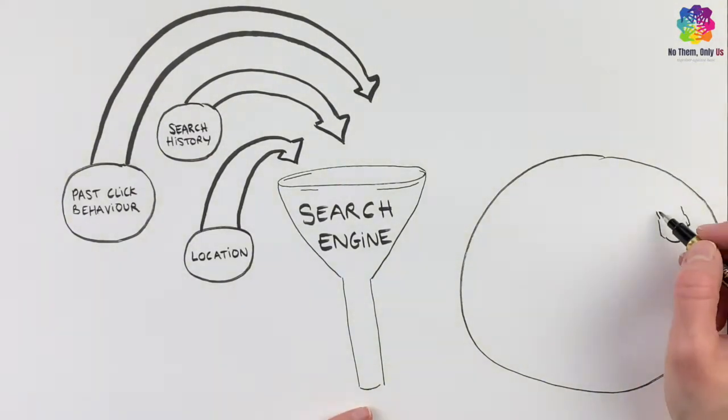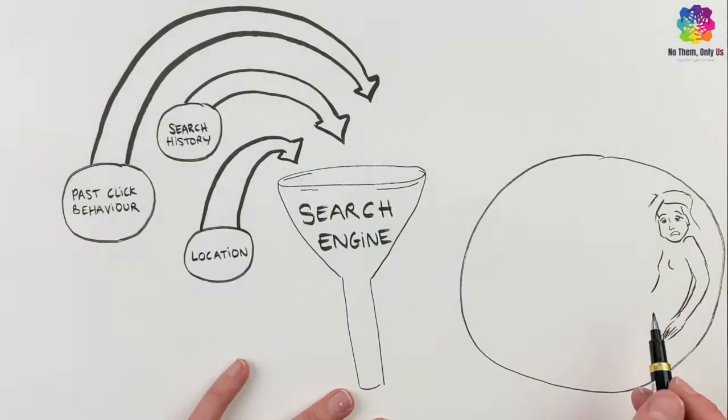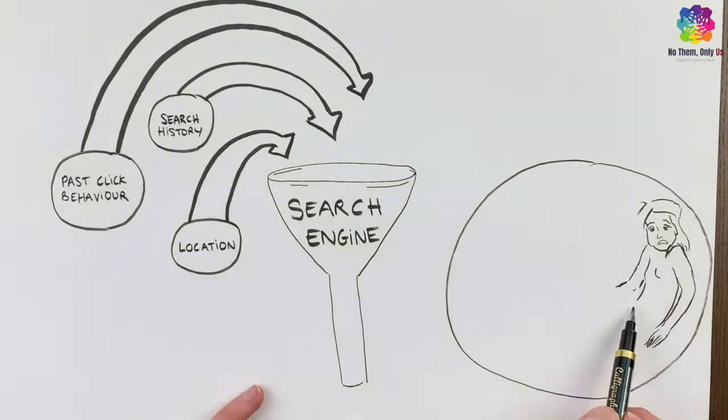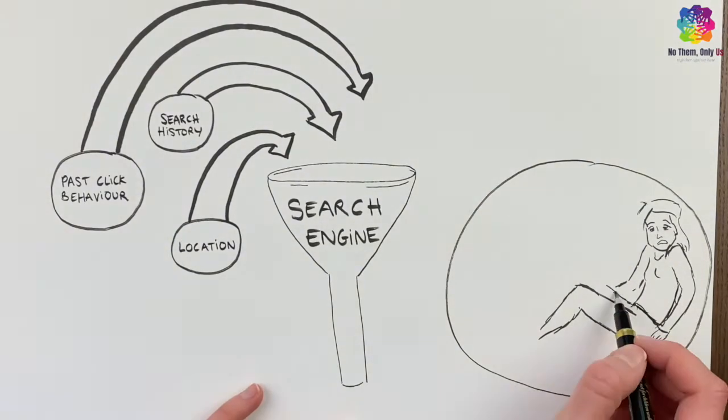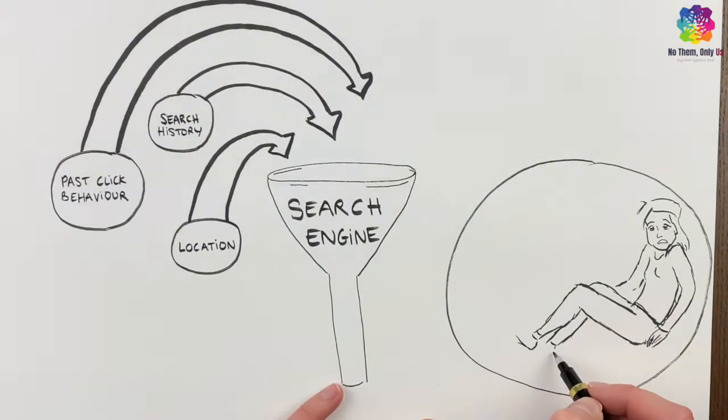When you're searching for information on Google, once again, the search results will not be the same depending on your past search history, your location, your past click behavior. Google's algorithm will place at the top the information that it thinks you will find the most relevant, what it thinks you want to hear.